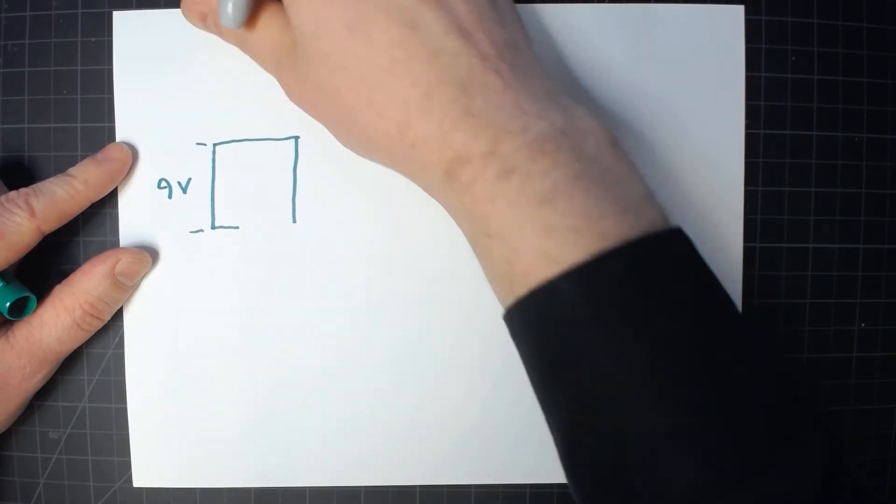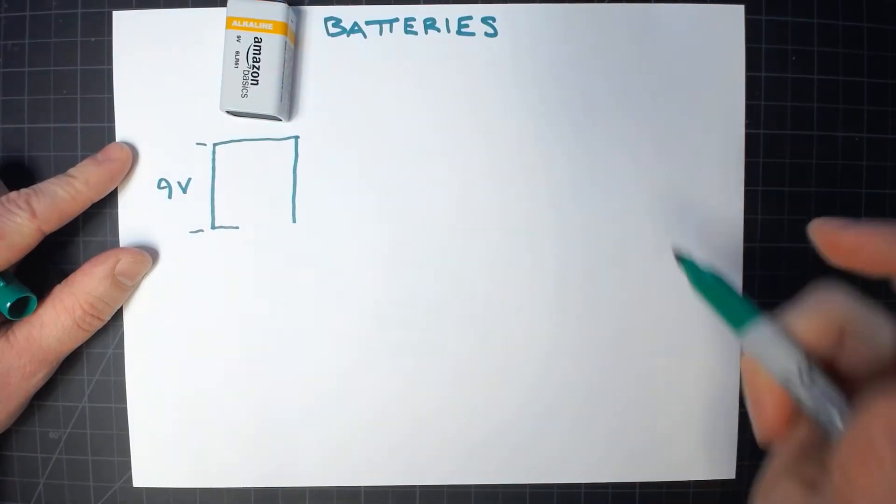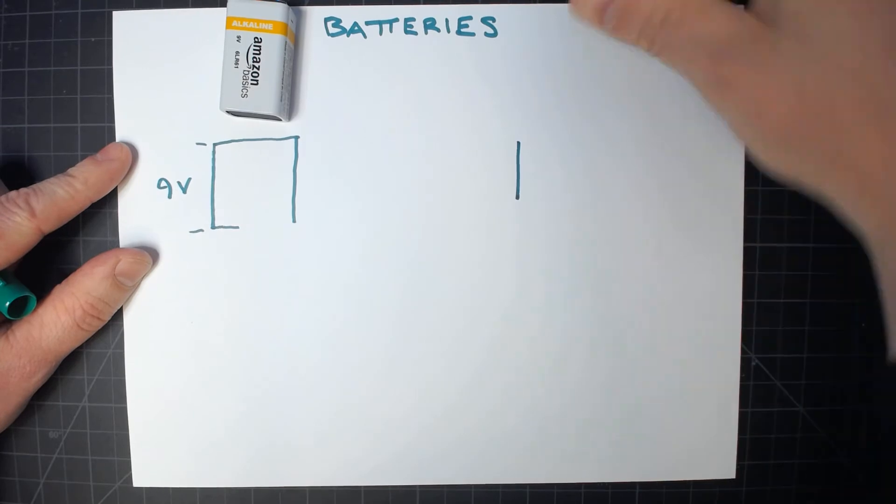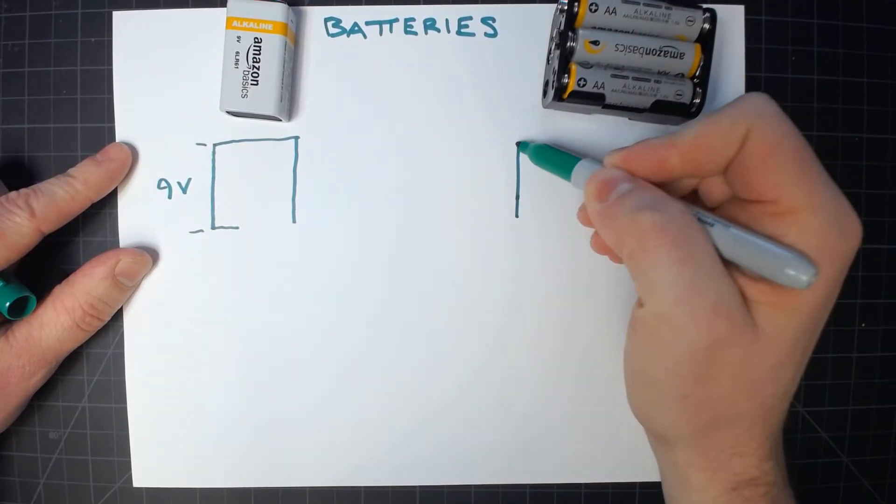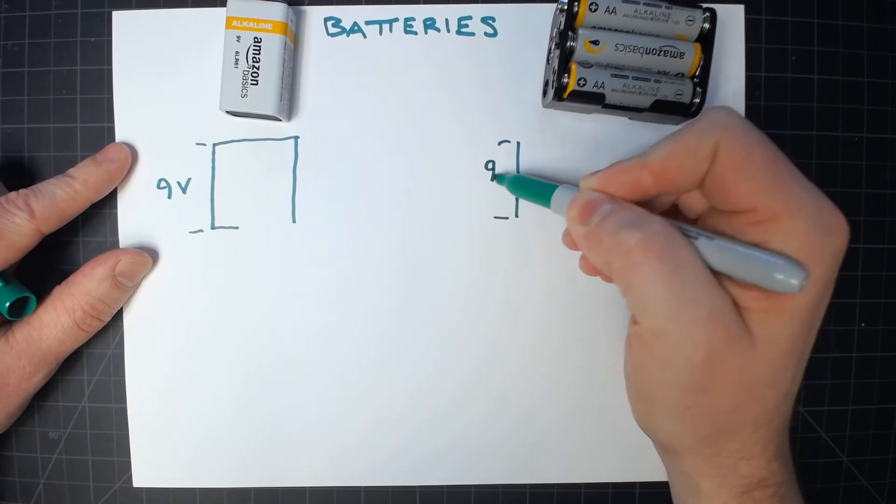That's a standard 9 volt battery. We'll place that there. My six AA battery holder is also 9 volts. So the height is still 9 volts. It's the same.